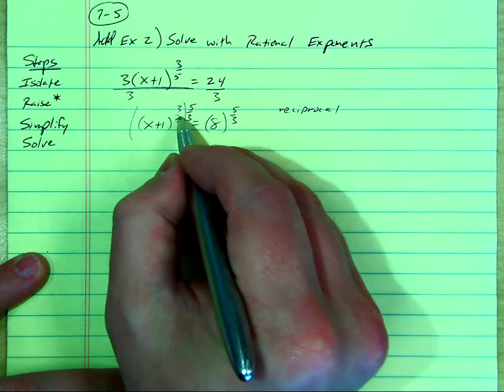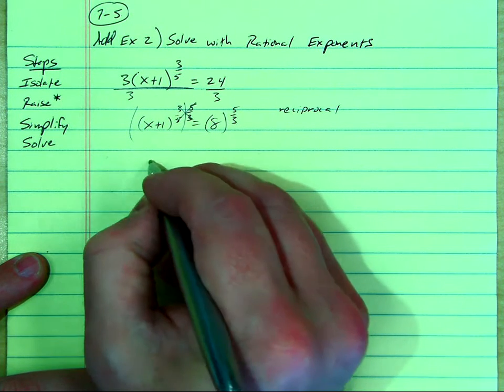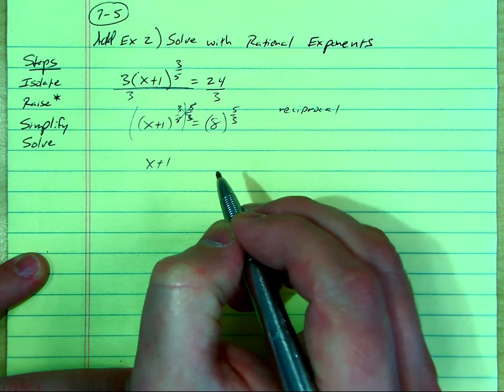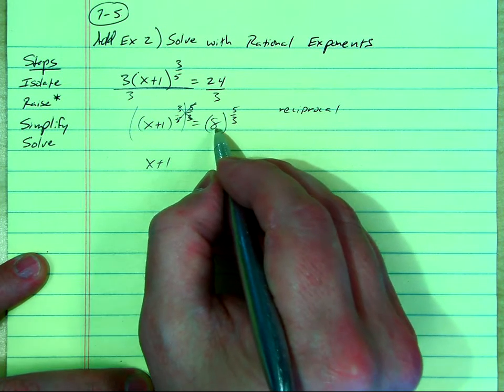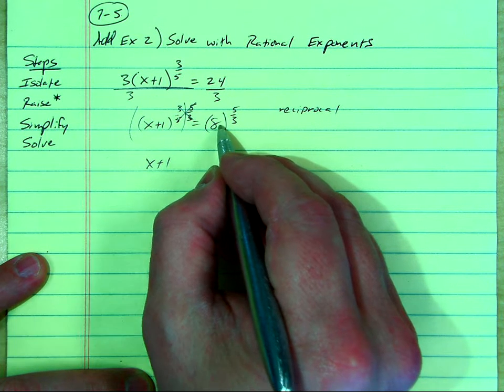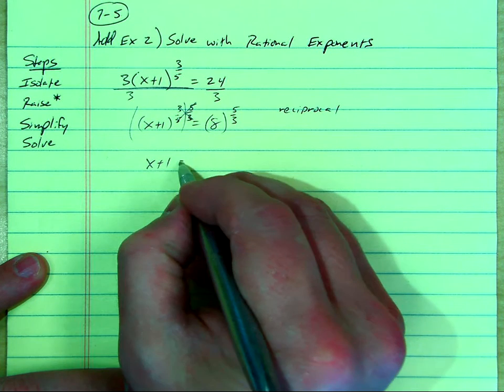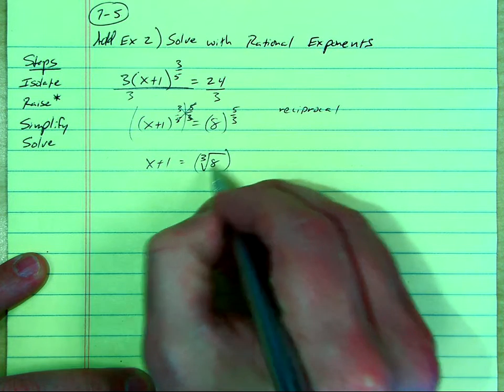Now look what happens here. 3 times 5 is 15, 5 times 3 is 15. They cancel out, and just the x plus 1 drops out, which is what we want. And then we have to simplify this expression, and this is why we went through all of that work last lesson on how to simplify fractional exponents. This is the cube root of 8, all up to the 5th power.